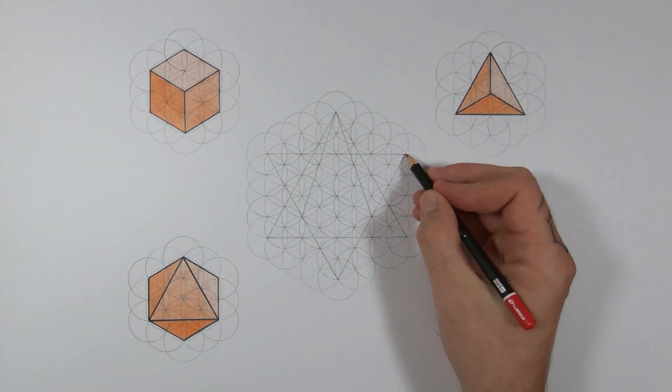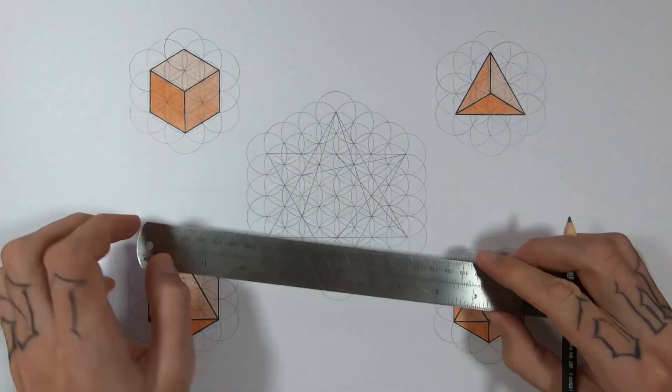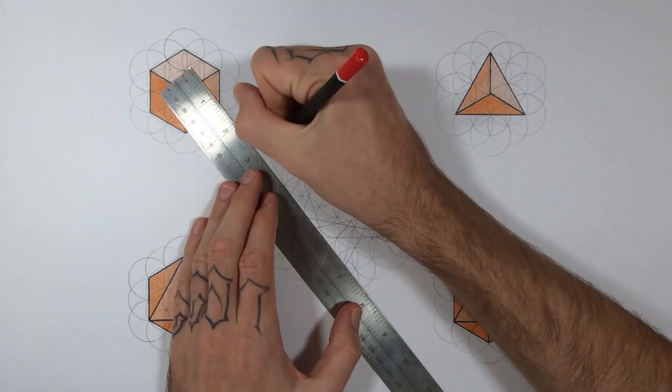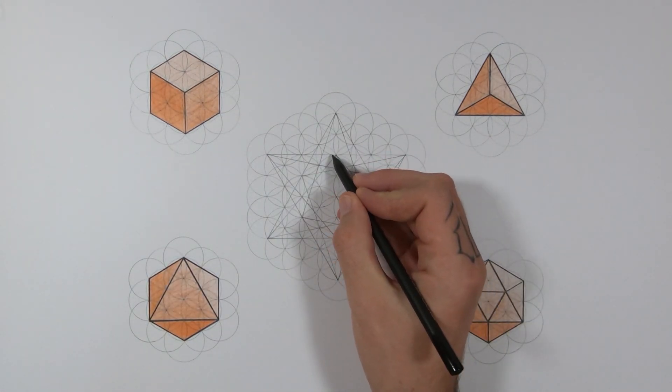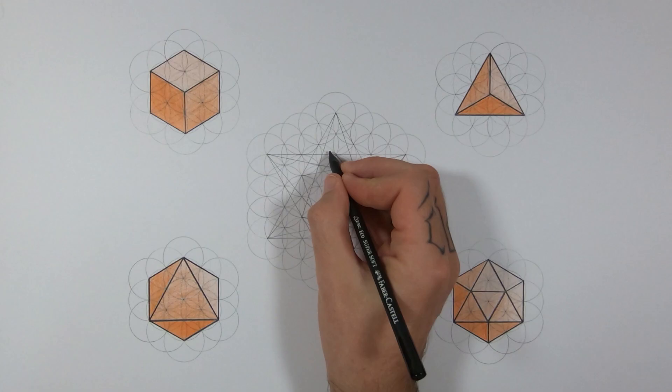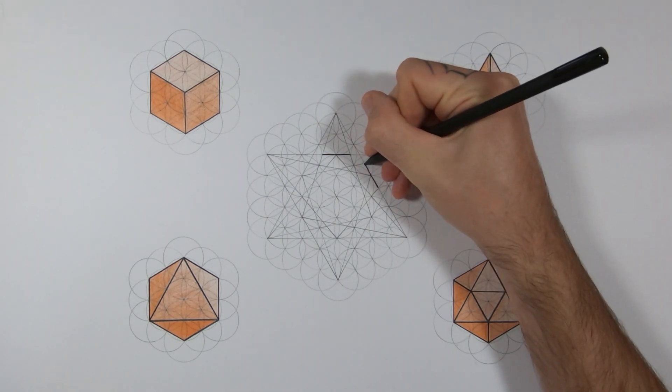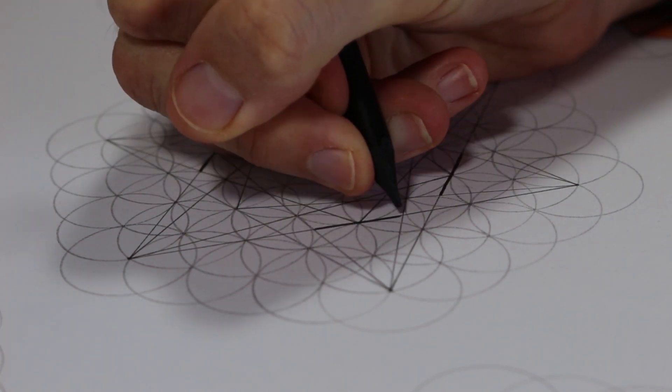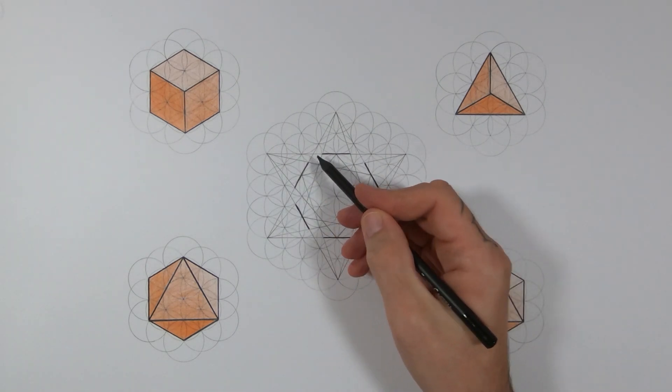We just have to do that all the way around. These lines here will be the edges of the shape. I'm going to freehand these so you can see it a bit better. Work your way around and then close the gaps.